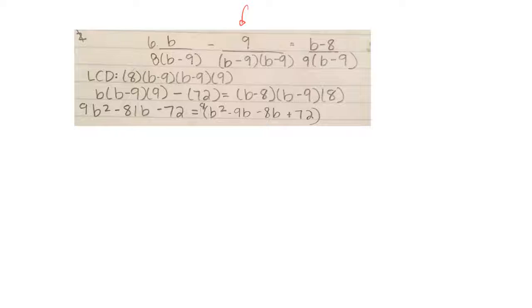Your lowest common denominator is this. So I need to multiply this term by an 8, a b minus 9, a b minus 9, and a 9.